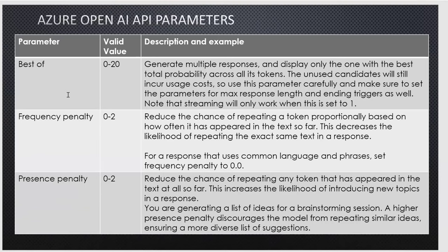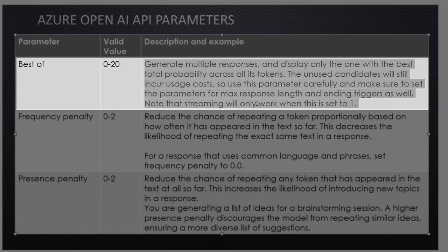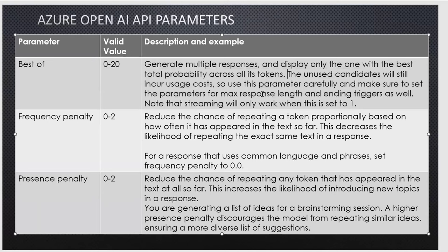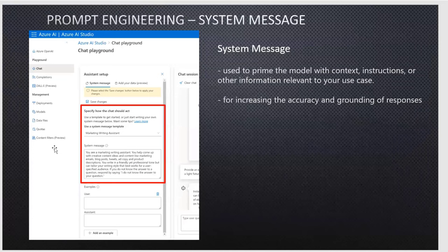The 'best-of' parameter tells the model to generate multiple candidate responses — for example, best-of-three generates three responses and returns the best one. However, this increases cost because unused candidate responses also incur token usage costs.